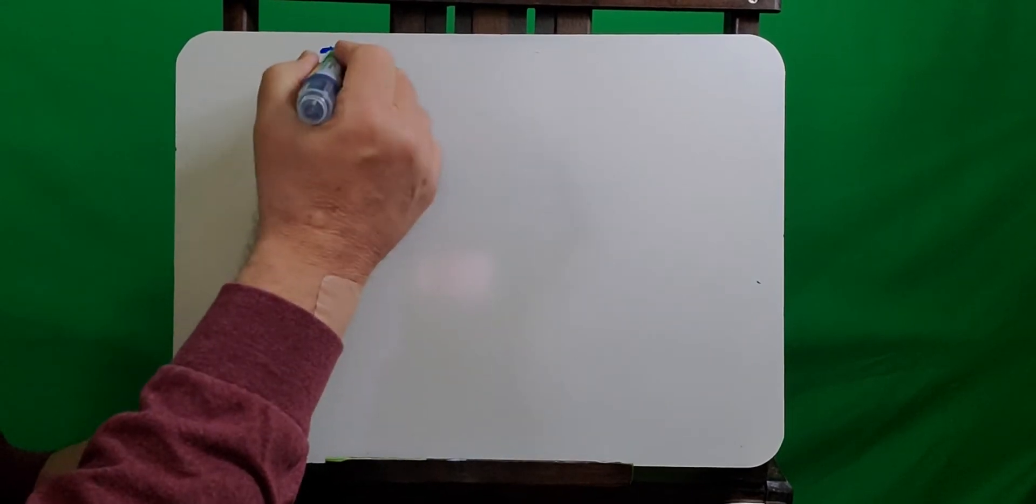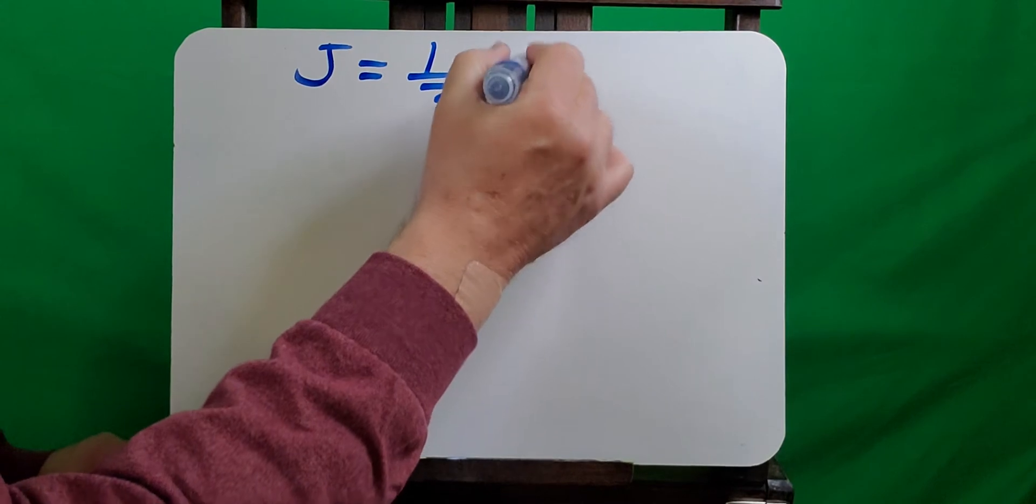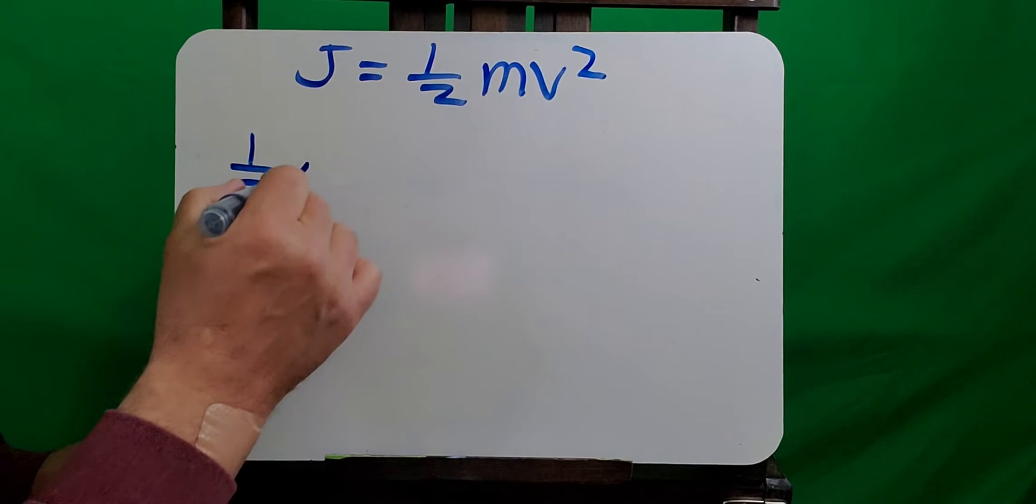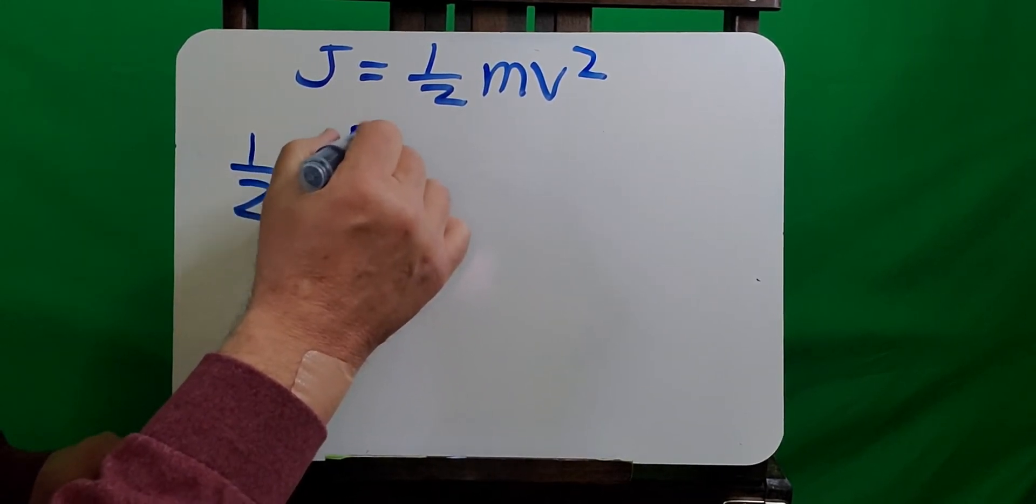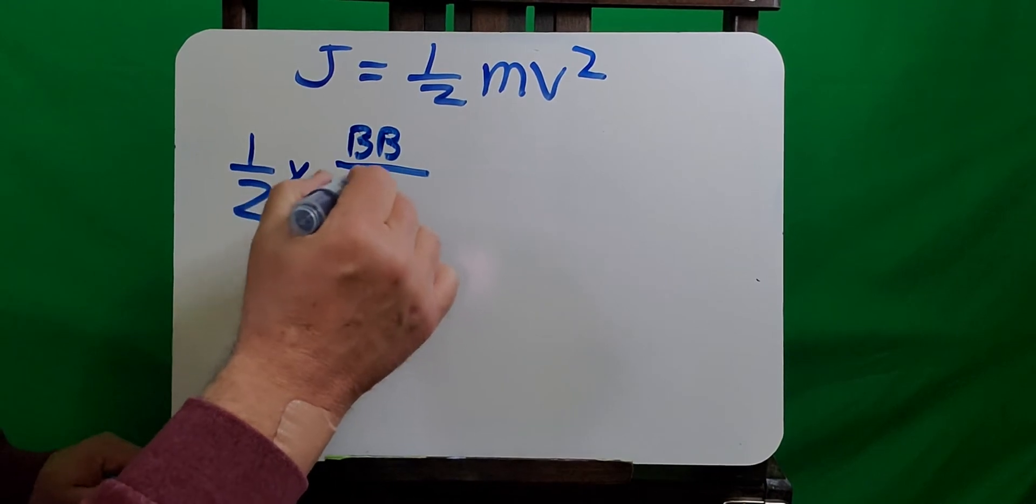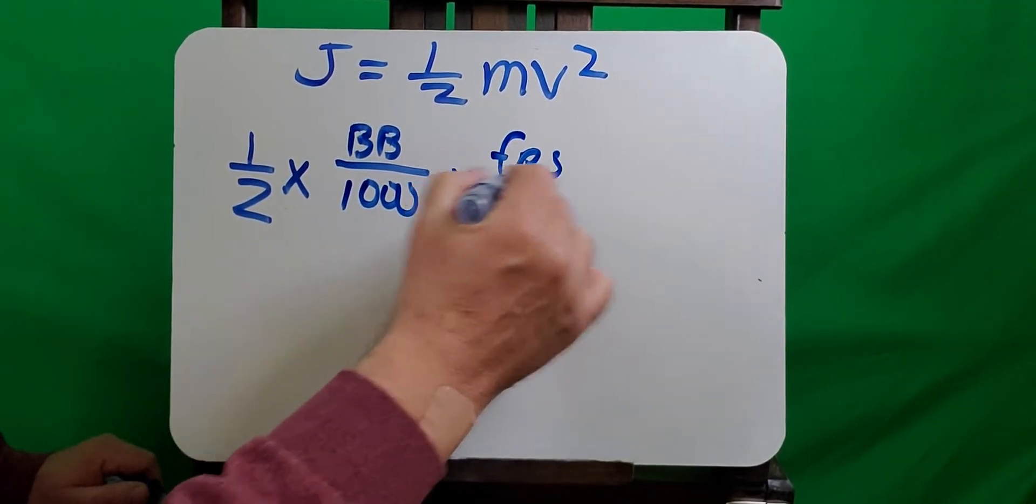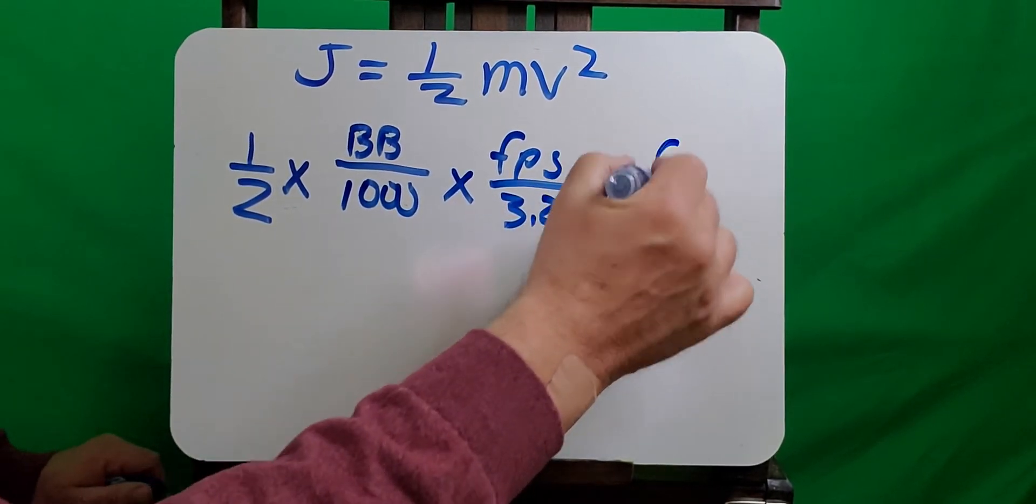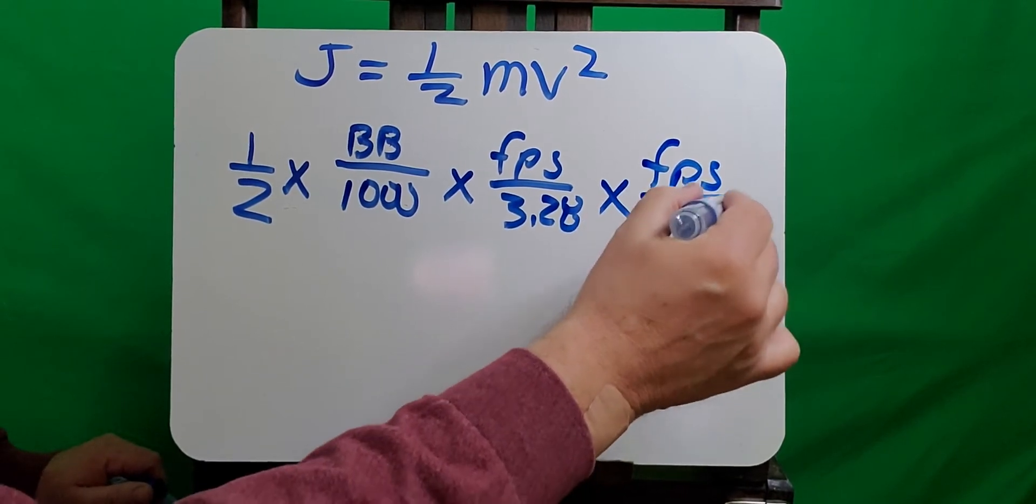So let's look at our formula again with conversions. Remember that joules is equal to one-half mv squared, with the mass in kilograms and the velocity in meters per second. So with our conversions, it's equal to one-half times the weight of the BB divided by 1,000 to turn the BB weight into kilograms times feet per second divided by 3.28 times feet per second again divided by 3.28 because the velocity is squared.